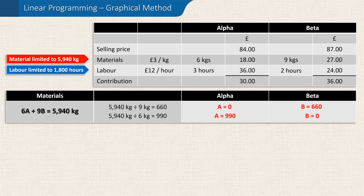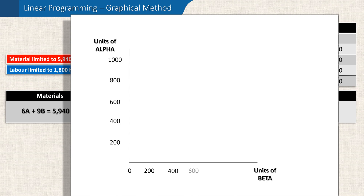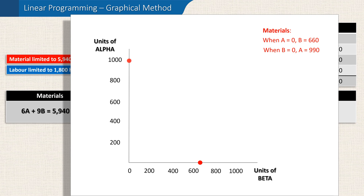And now we have two points we can plot on a graph. We'll plot the alphas vertically and the betas horizontally, and show a suitable scale representing the number of units. We could just as easily plot them the other way around, but ultimately it won't make any difference to our answer. When there were no alphas produced, we could make 660 betas — that's this point on the graph. And when there were no betas produced, we could produce 990 alphas — that's this point. And we can draw a line between the two points.